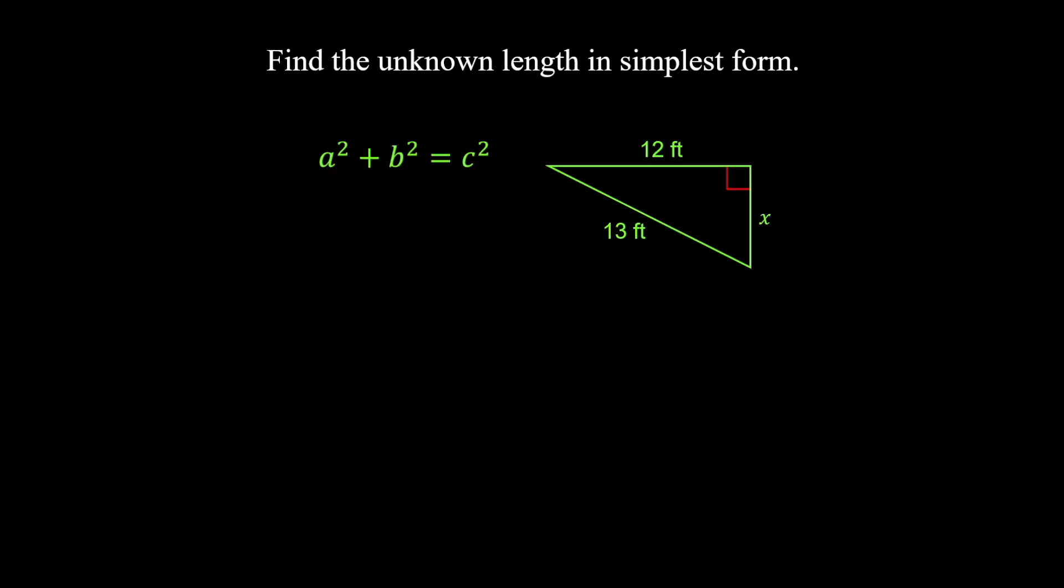Let's use the Pythagorean theorem to find the unknown length x. A and b are the legs of the right triangle that form the right angle, so replace a with 12 and b with x. C is the hypotenuse, which is 13 feet in this case.